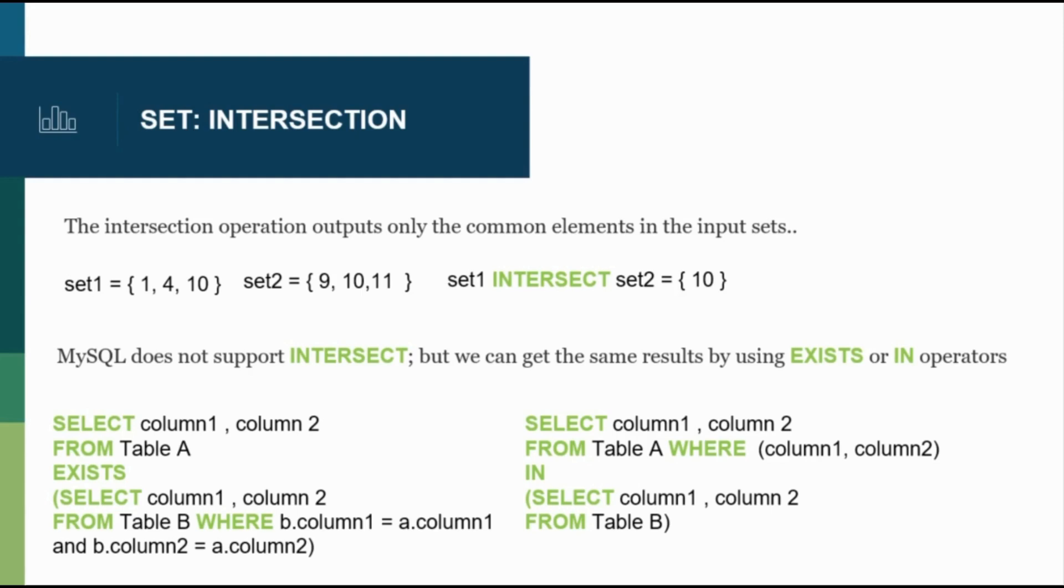The second type of set operator is intersection. So set1 intersect set2 is going to only bring back whatever is common between those two sets. MySQL doesn't support the intersect keyword, but we can get the similar result by using exists or in operator.